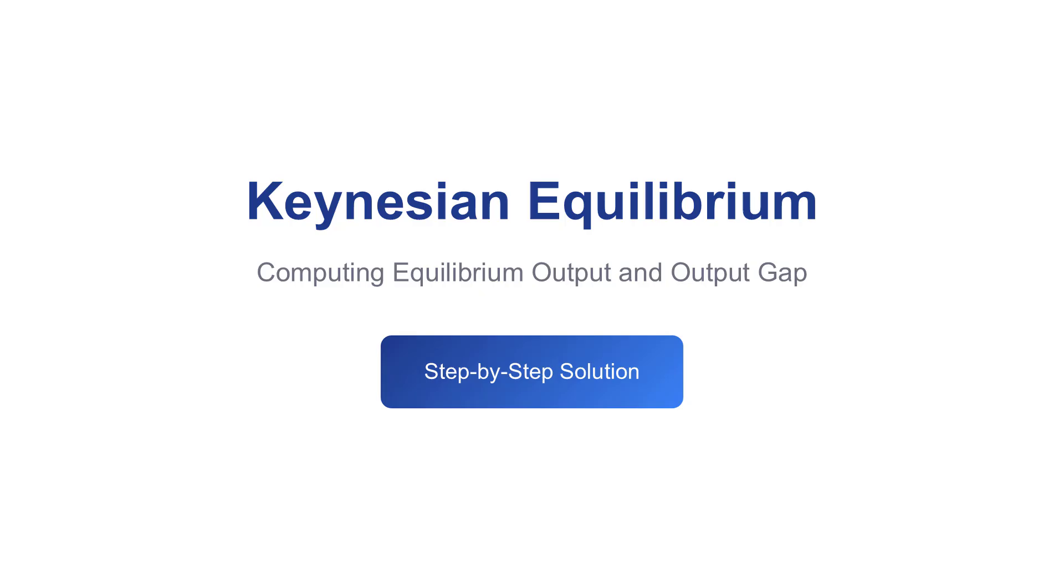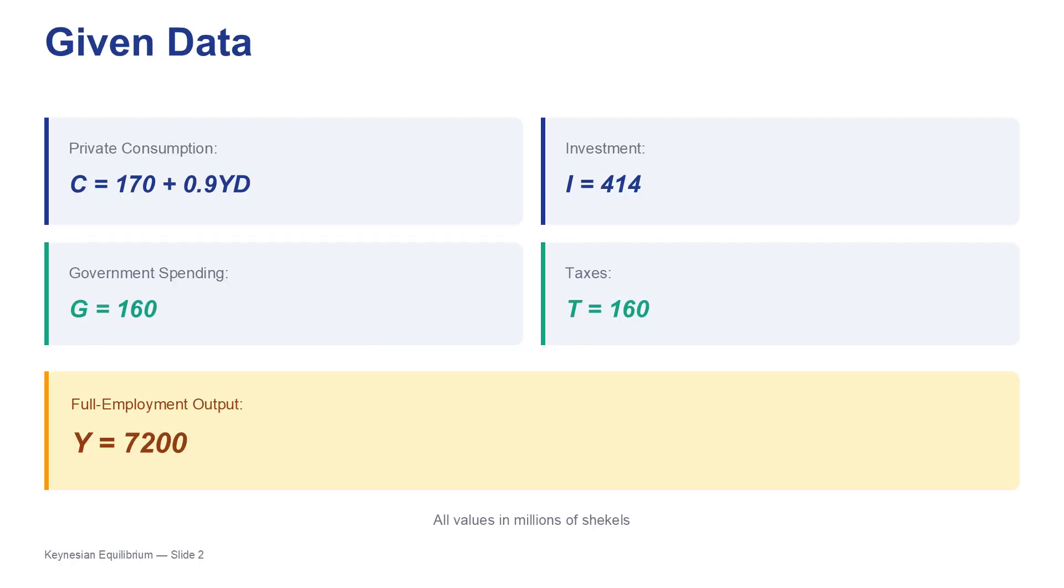We have a closed economy model and a very focused mission. What's the plan? Three things. First, we'll calculate the current economic equilibrium. Then we identify the size of the problem, the output gap. And finally, we figure out the precise government spending needed to get to full employment. And we're being really strict here. We're only using the data from our source documents, nothing else. We'll talk in terms of millions of shekels, since that's what the source uses.